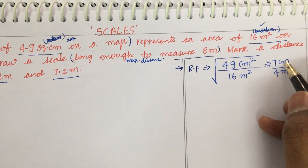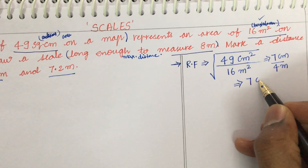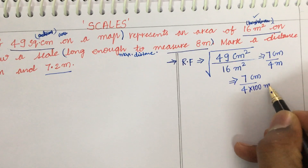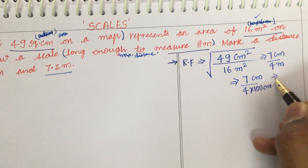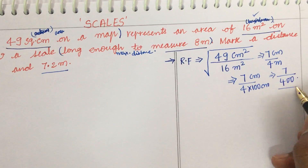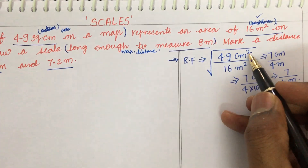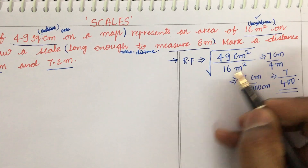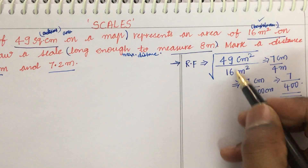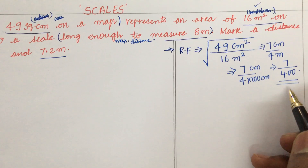Since the units are not the same, we need to convert them to similar units. So 7 centimeters divided by 4 meters becomes 7 divided by 400 centimeters, giving us RF = 7/400. When the problem is given in area (power of square), we take the square root of both quantities to convert to linear quantities and then work in similar units.